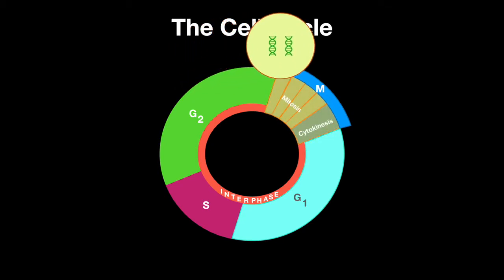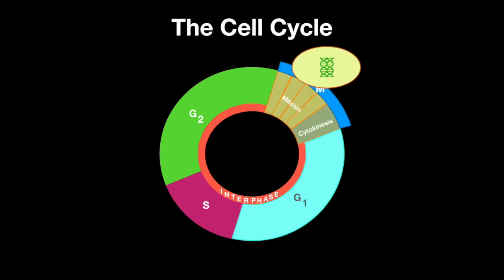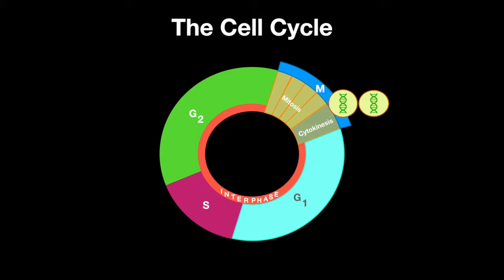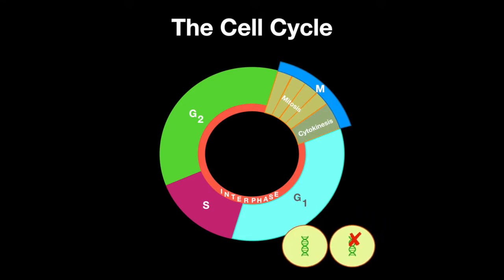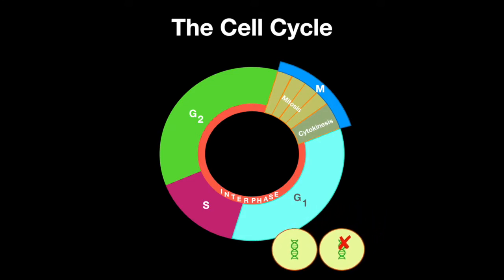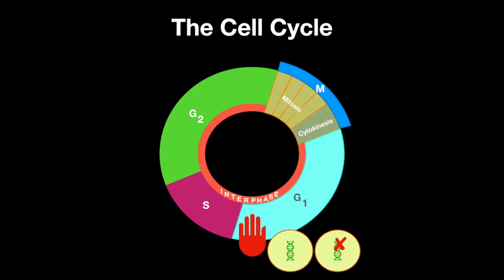M phase is mitosis, where the cell splits into two daughter cells. In order for the cell to divide, it must replicate its entire genome without making mistakes. To ensure there are no mistakes, there are checkpoints along the cycle that may halt the cell or cause it to undergo apoptosis.